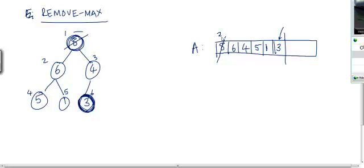Now my shape property is maintained because now I have 3, 6, 4, 5, 1. So if I replace this by 3, I am going to have 3, 6, 4, 5, 1. But my heap property is no longer satisfied now because this element 3 is smaller than both of its children.